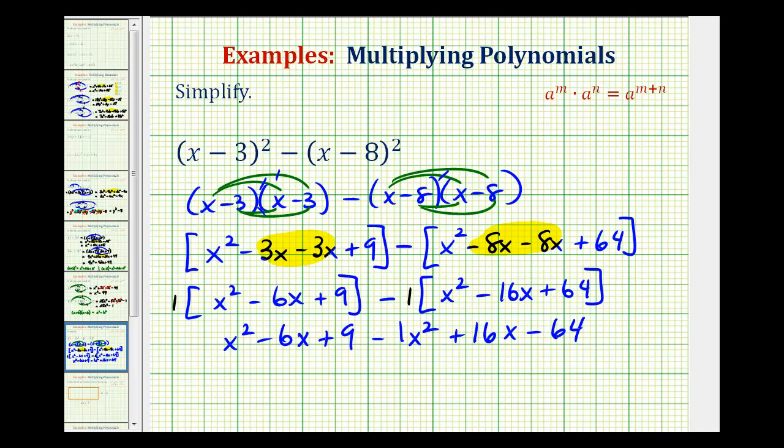And the last step will be to combine like terms. We have two x squared terms, two x terms, and two constants. Looking at the x squared terms, we can think of this as one x squared. So one x squared minus one x squared, that would be zero.